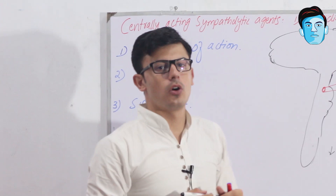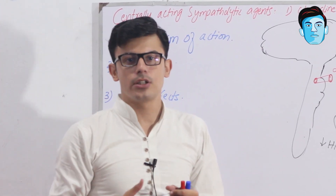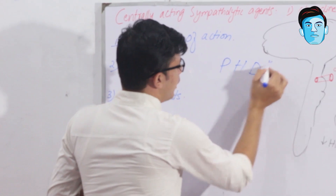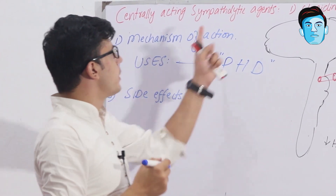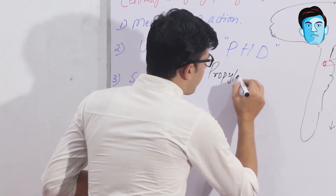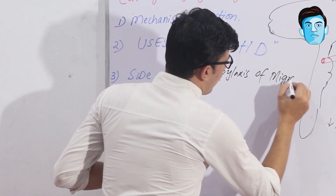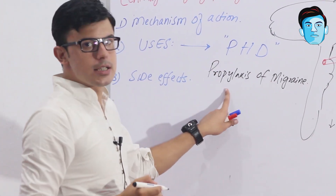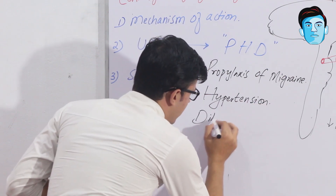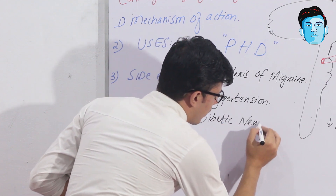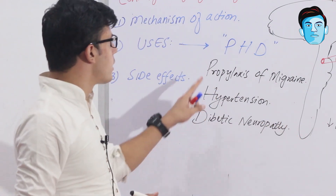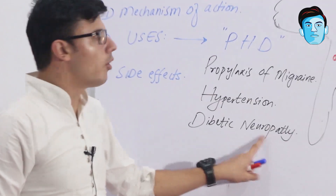Now let's talk about the uses of centrally acting sympatholytic agents. There are many uses, but the key ones can be remembered using the mnemonic PHD: P stands for Prophylaxis of migraine, H stands for Hypertension, and D stands for Diabetic neuropathy. These are the most important uses you need to remember.